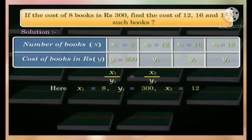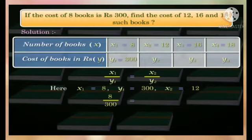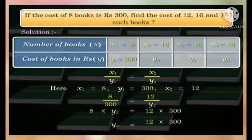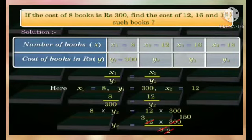We need to find y2. Substituting the values in the relation, we get 8/300 = 12/y2. Cross-multiplying, we get 8×y2 = 12×300. Therefore, y2 = (12×300)/8 = 450.